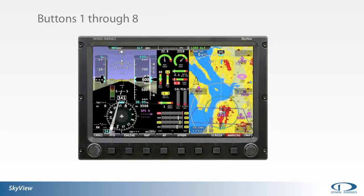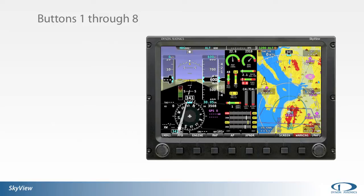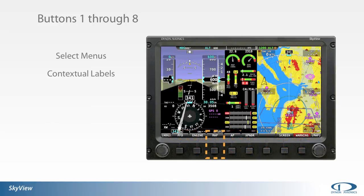The function of any one of the eight buttons is based on the label displayed above the corresponding button along the bottom of the screen in the main menu. Through these contextual labels, buttons one through eight can be used to enable or disable features, change the state of systems, or perform designated actions.